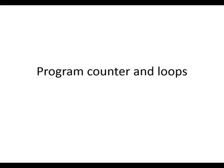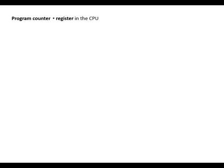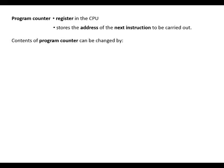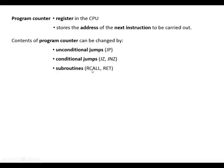The program counter is a register in the CPU that stores the address of the next instruction to be carried out. The program counter's contents can be changed by unconditional jumps, conditional jumps, and calling and returning from subroutines. In this video, we'll be looking specifically at the unconditional jump — jump non-zero.